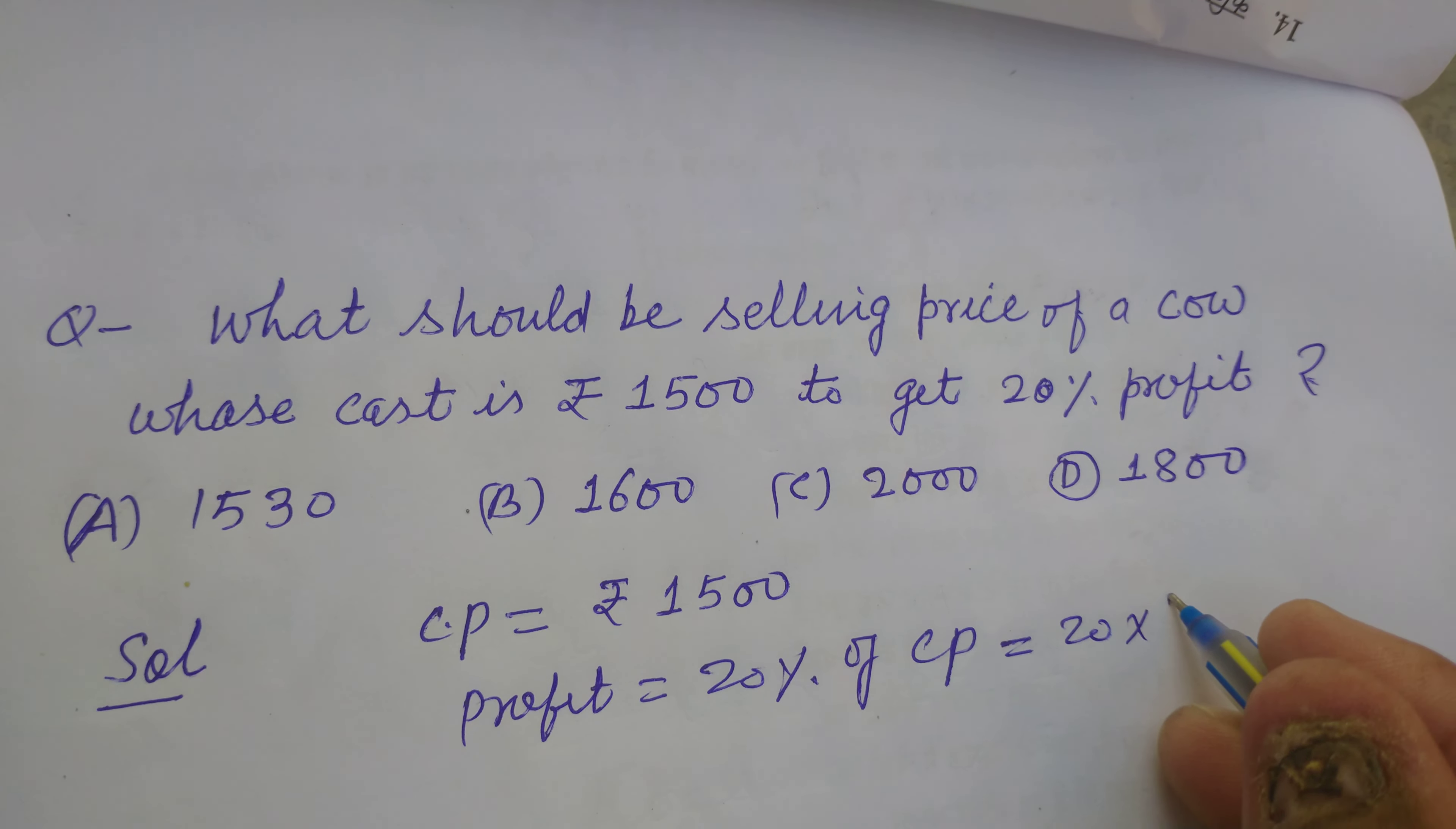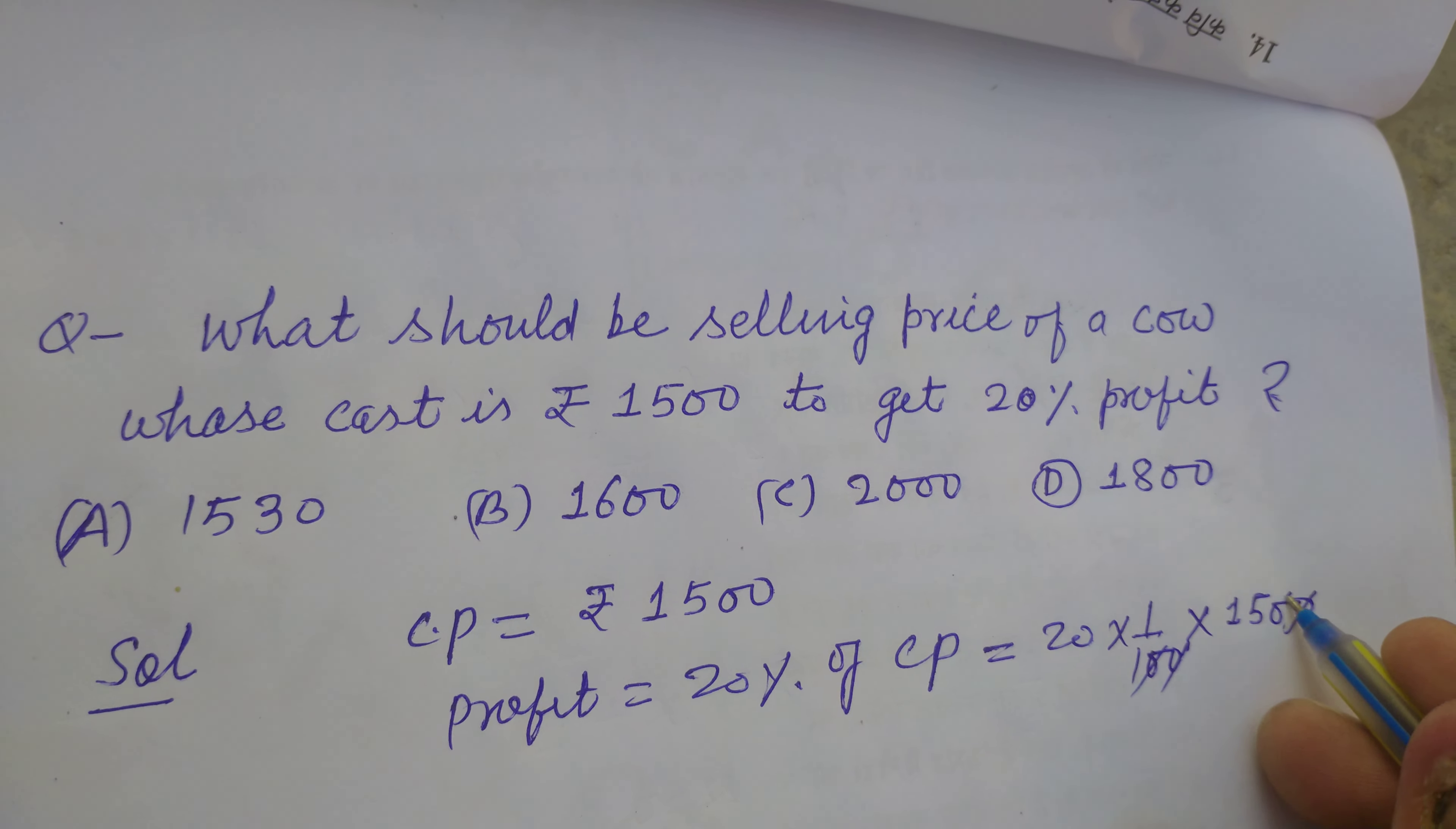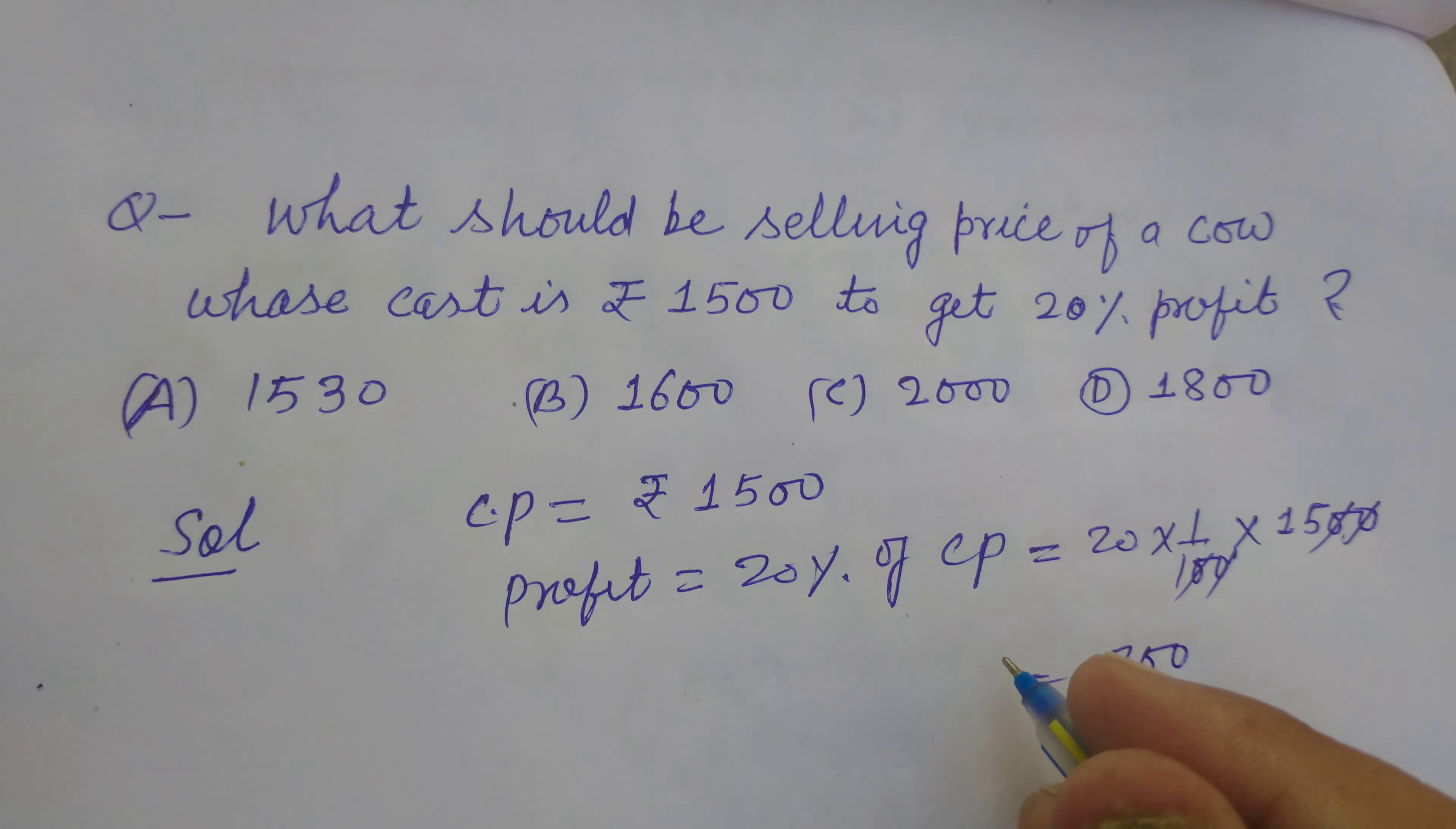So 20% means 1 upon 100 of cost and this is 1500. So 20 cancel, we got 15 to 30, Rs.300 is the profit.